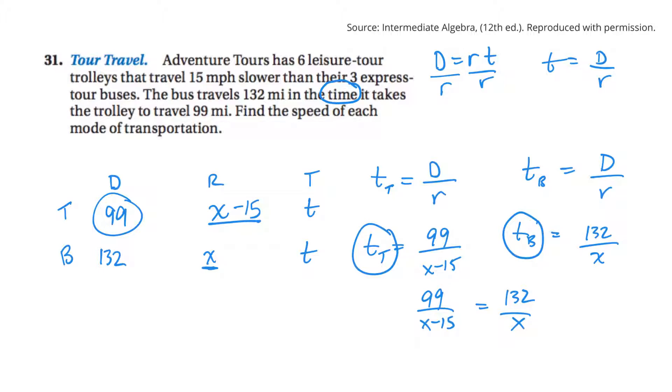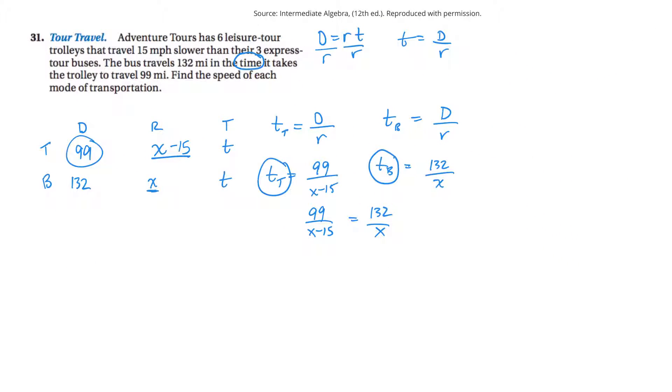Okay, let me shrink things a bit. So now I can use our idea of lowest common denominator. Lowest common denominator will be x and x minus 15. So I'll multiply both sides by x and x minus 15. So on the left side, the x minus 15s go. Left was 99x. On the right, the x's go.